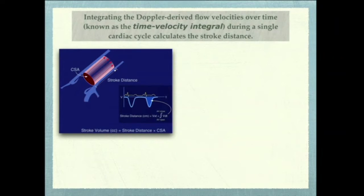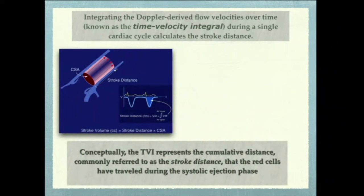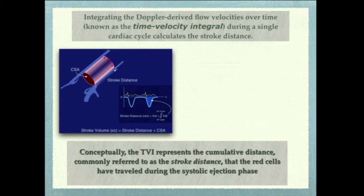VTI is the integration of Doppler-derived flow velocities over time. That means the distance travelled by the RBCs from one point to another over that particular time is called the velocity time integral. The TVI or VTI — time velocity integral — represents a cumulative distance that a particular segment of blood travels over that period of time, and it is measured by pulse wave Doppler.